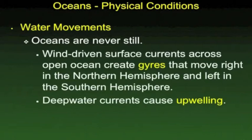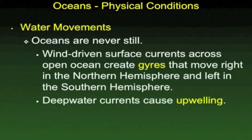The circular currents circling the Pacific and Atlantic are called gyres. They move to the right in the northern hemisphere and left in the southern hemisphere. In addition to these surface currents, which are mainly wind-driven, there are deepwater currents that, when they bump into a continent, rise up to the surface water — this is called upwelling. These upwellings bring lots of nutrients up into the area where fish and their food, the plankton, live. This is the source of many of the large fisheries in the world.